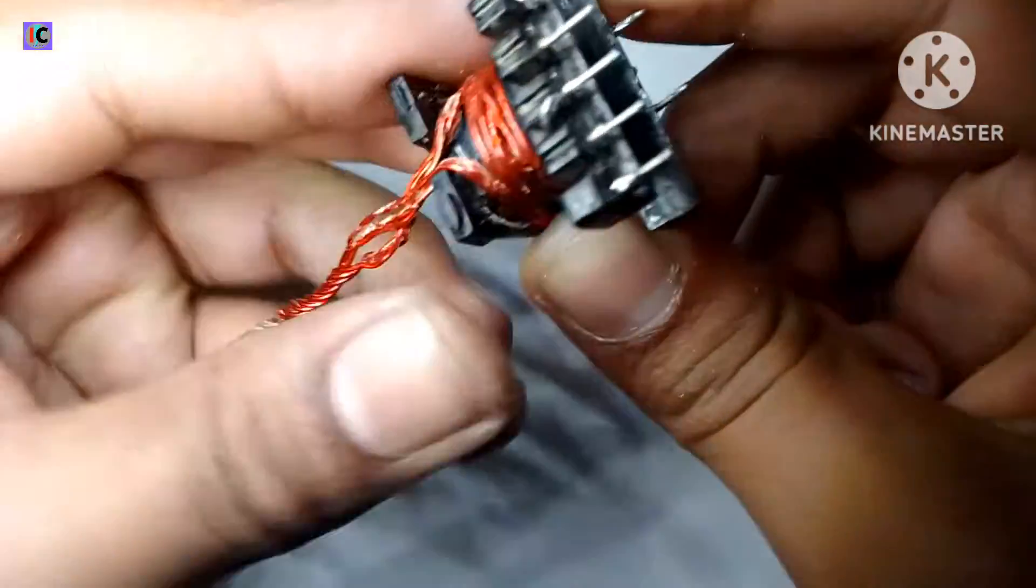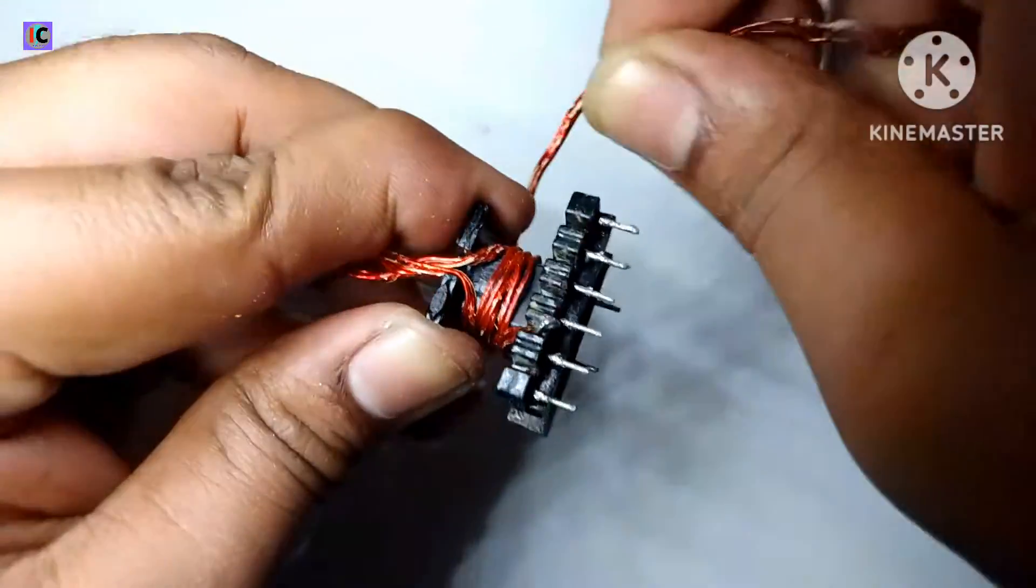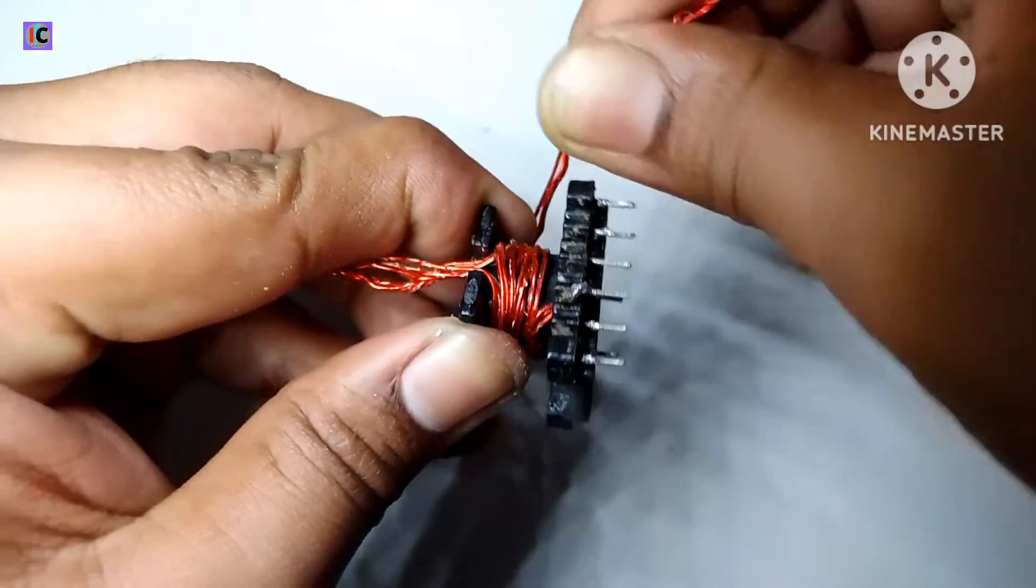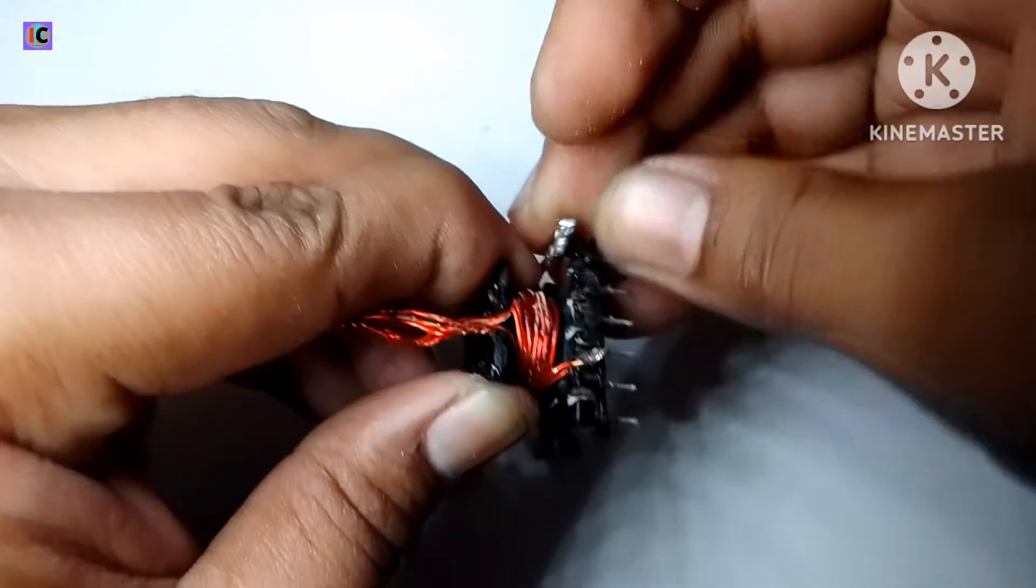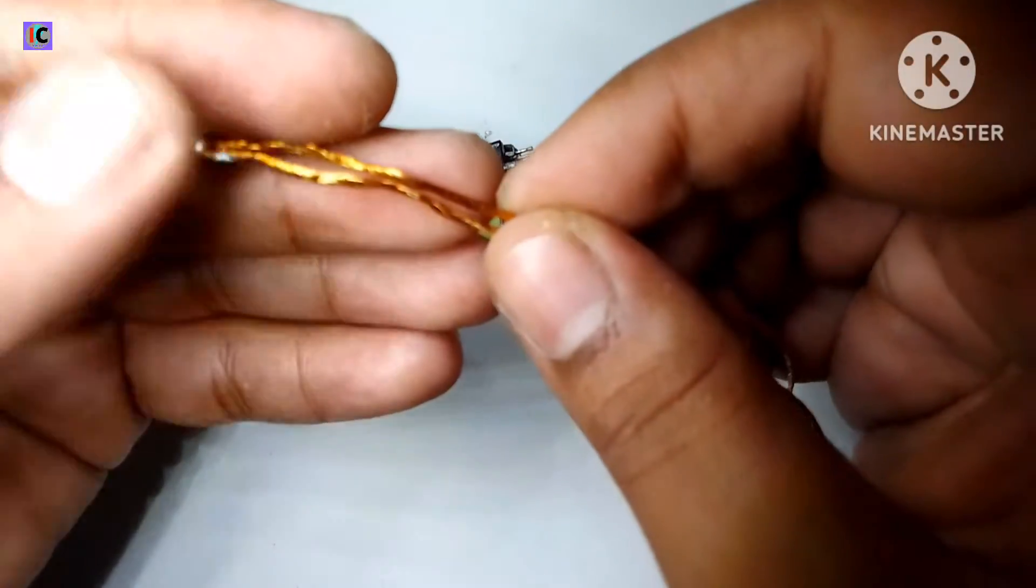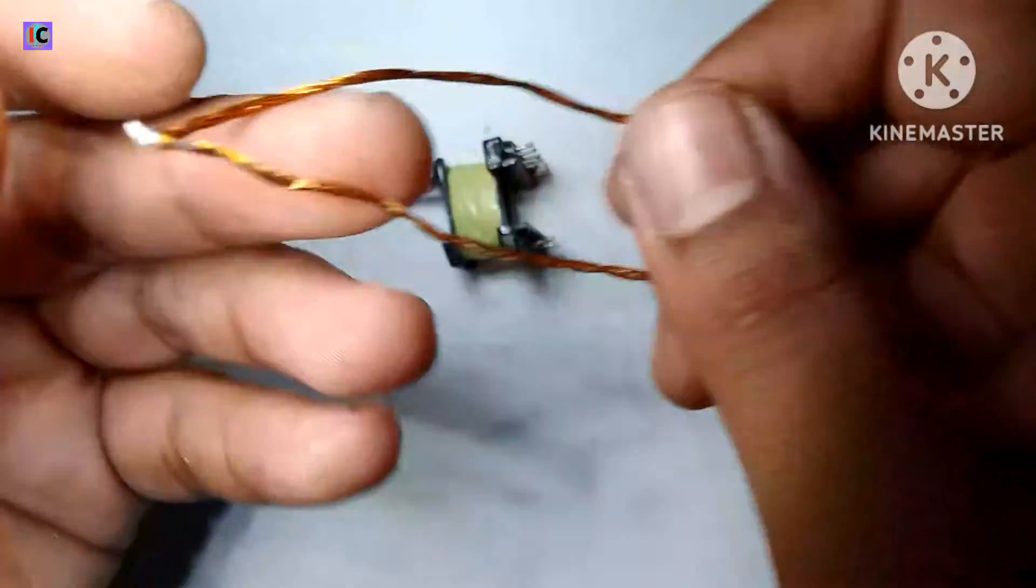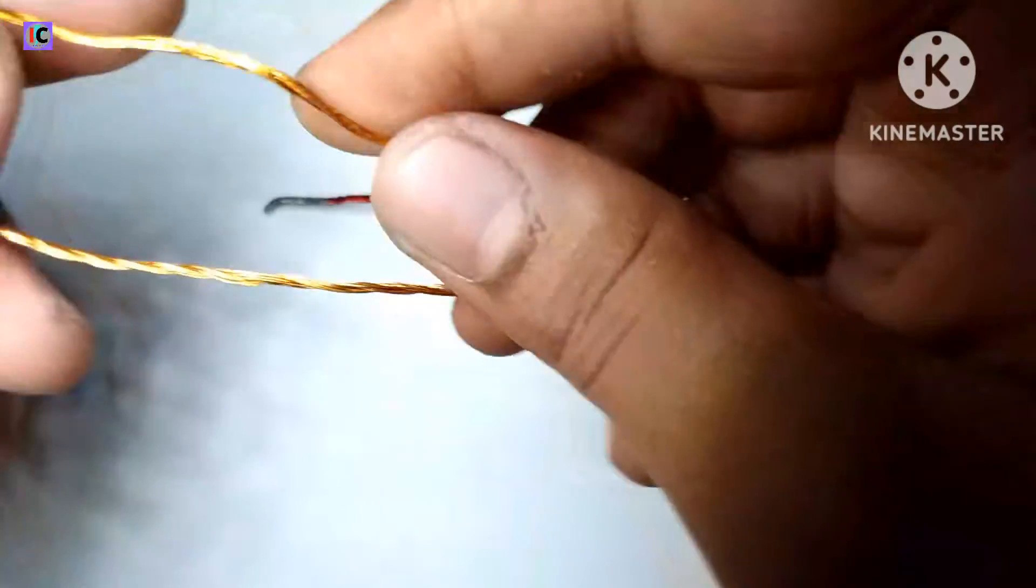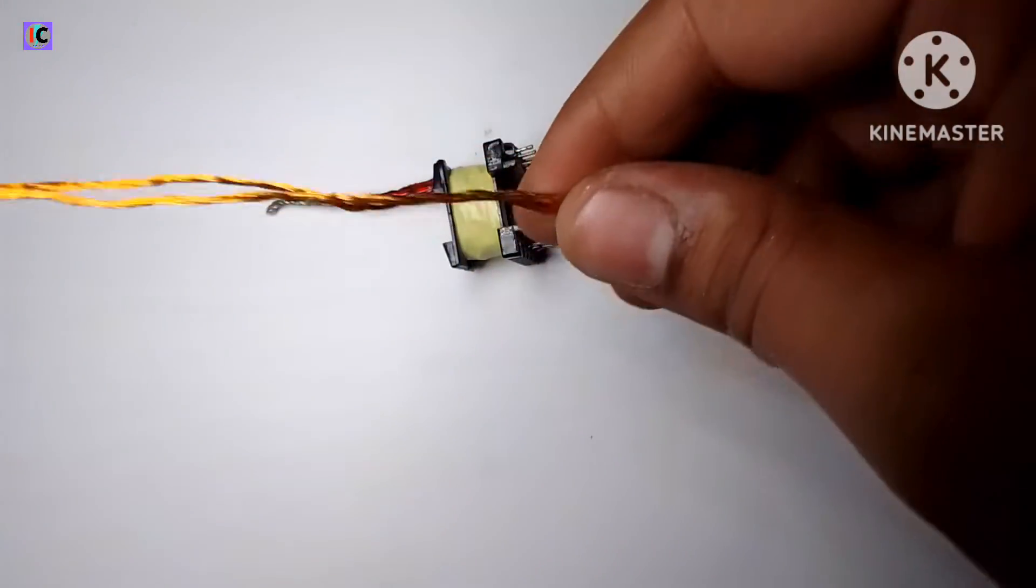The second side of this coil will be three turns also, so we are using the configuration of push-pull. For this, we have to wind with the center tap coiling, and this is the secondary coil of this transformer.